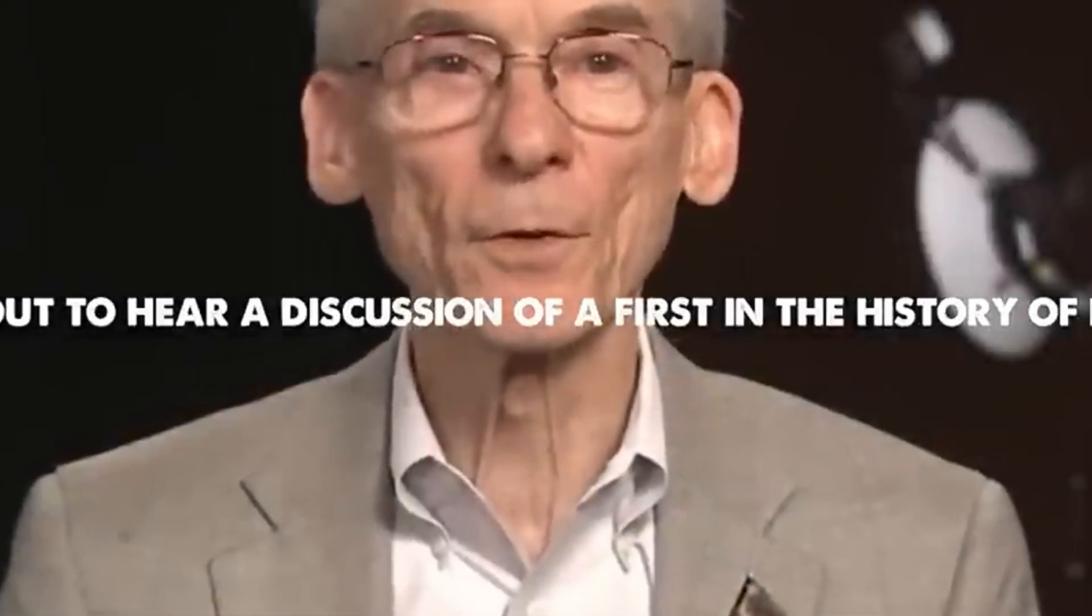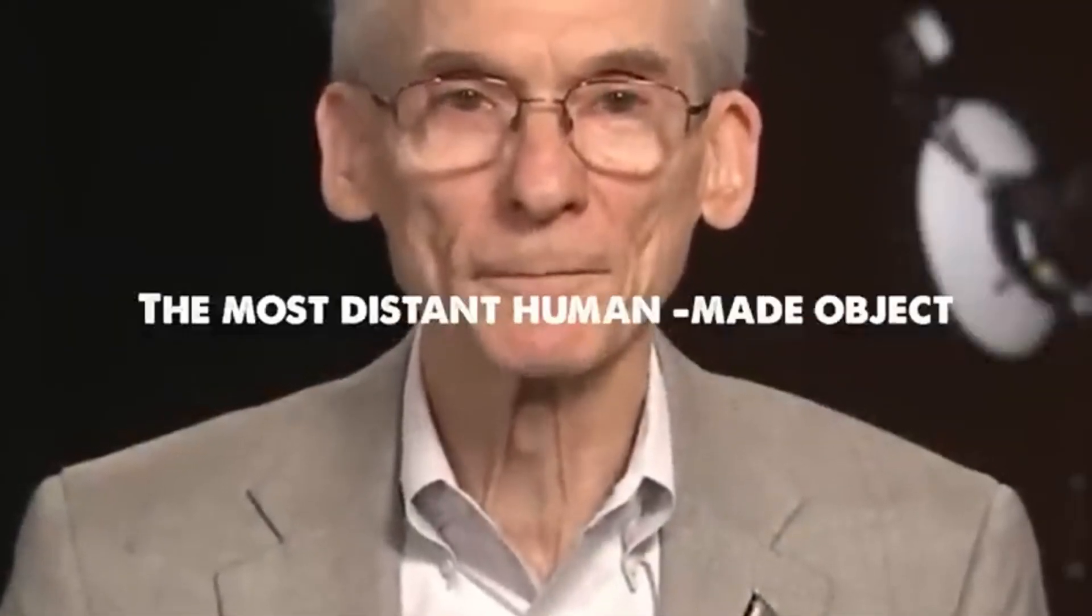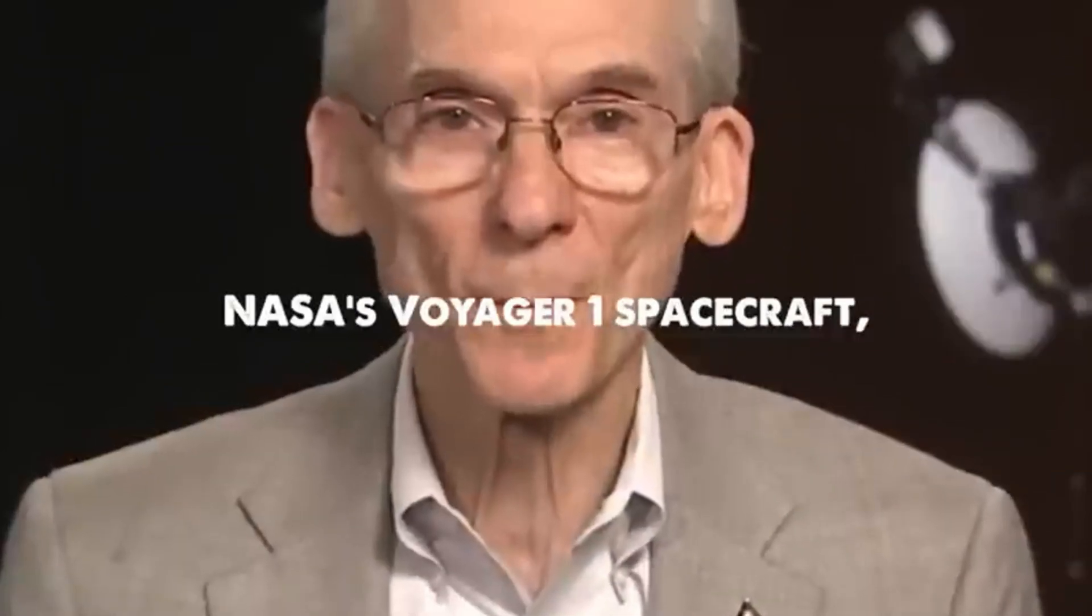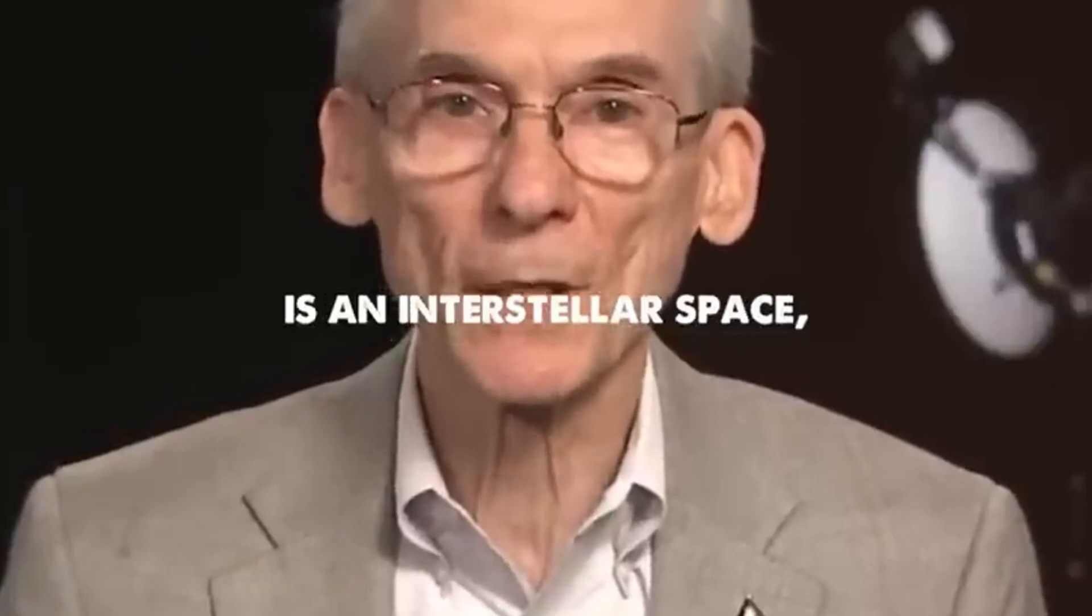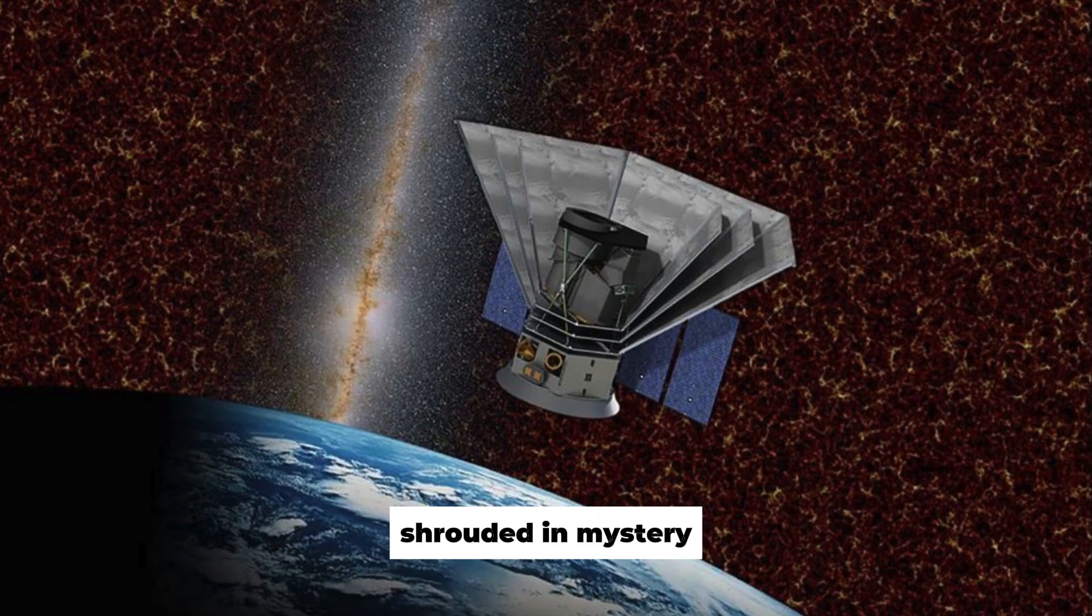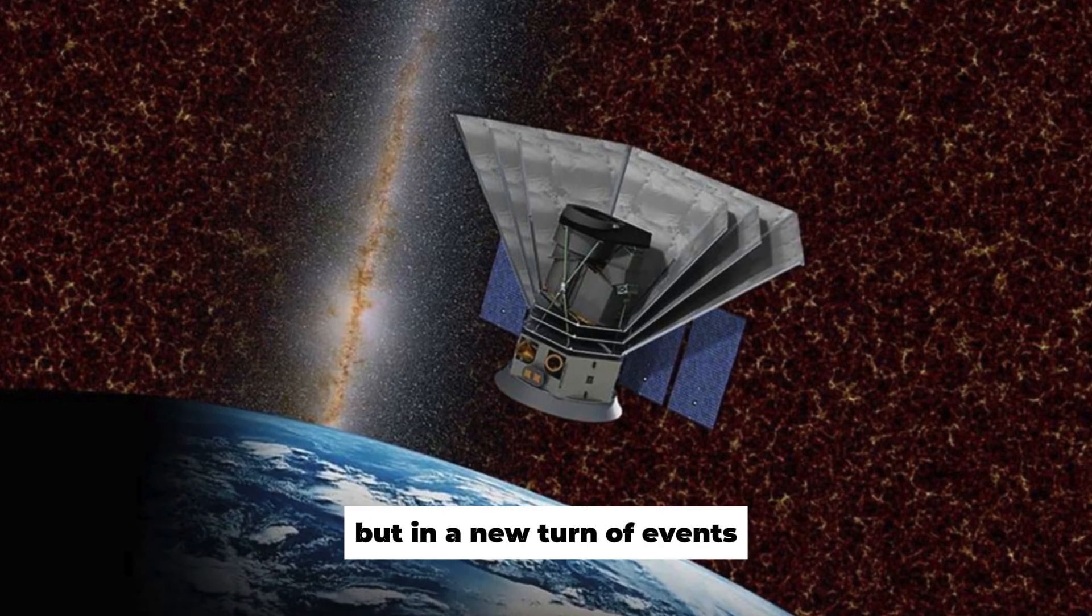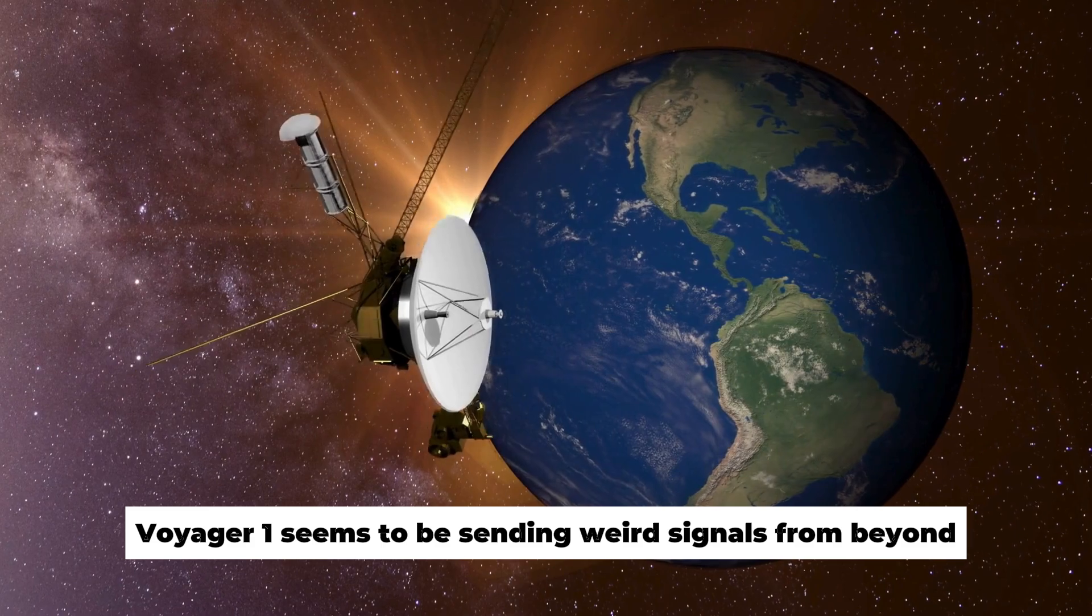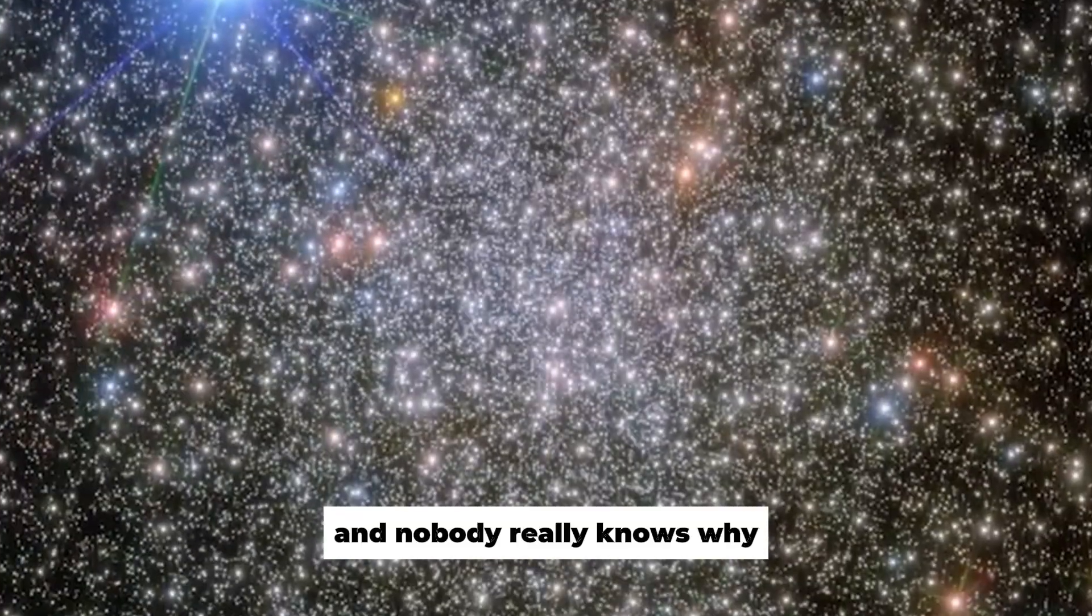You are about to hear a discussion of a first in the history of exploration. The most distant human-made object, NASA's Voyager 1 spacecraft, is in interstellar space, the space between the stars, enshrouded in mystery. But in a new turn of events, Voyager 1 seems to be sending weird signals from beyond the solar system, and nobody really knows why.